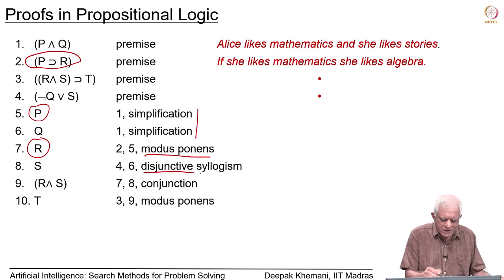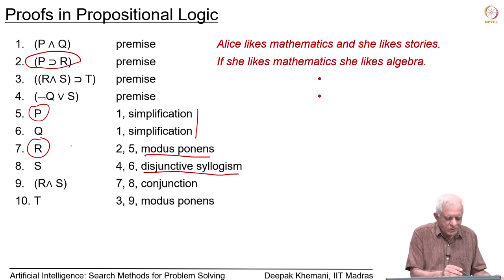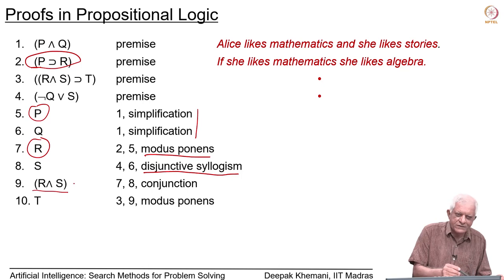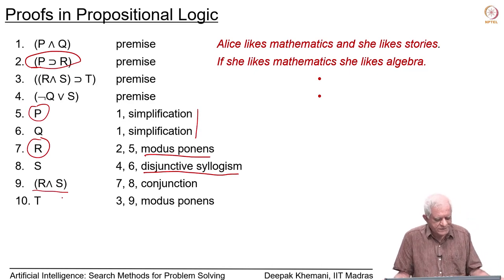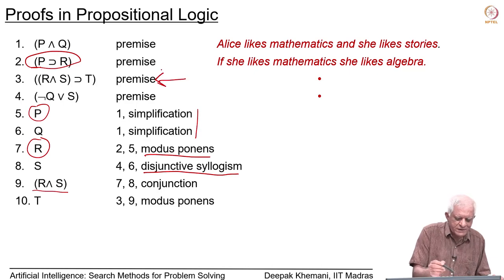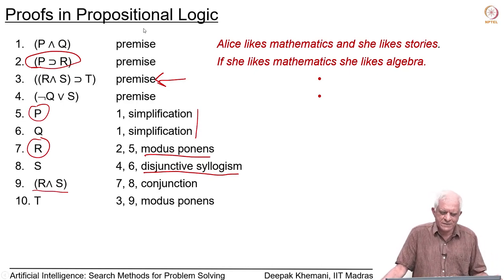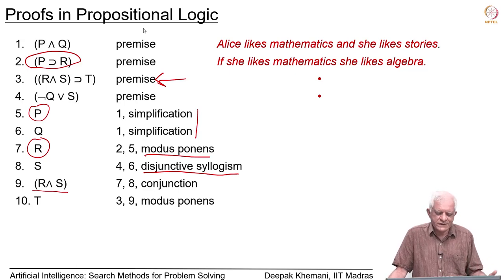How do we get S? There is another rule called disjunctive syllogism, which says that if not-Q or S is true and not-Q is false, then S must be true, because in an OR at least one must be true. Then we get R and S, because we have R and S separately and there is a rule called conjunction, which allows you to make a compound sentence given two simple sentences. Once we have R and S, we use R and S implies T to add T. This is also called natural deduction or forward chaining.